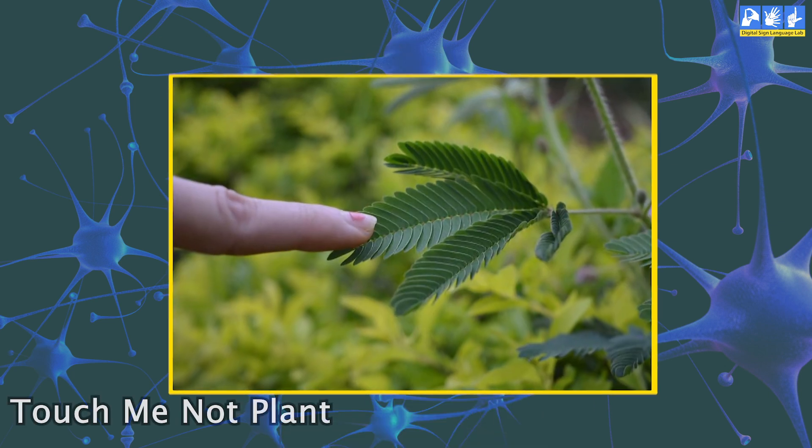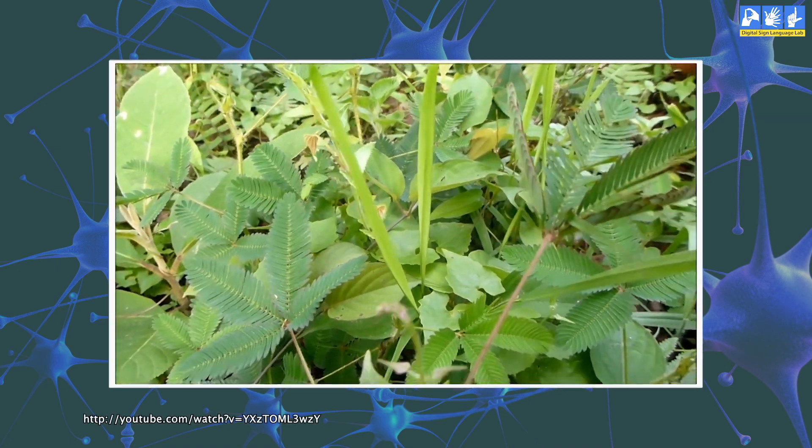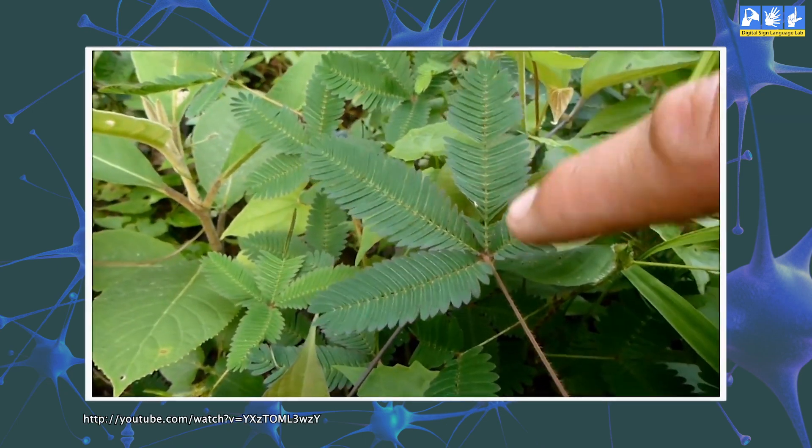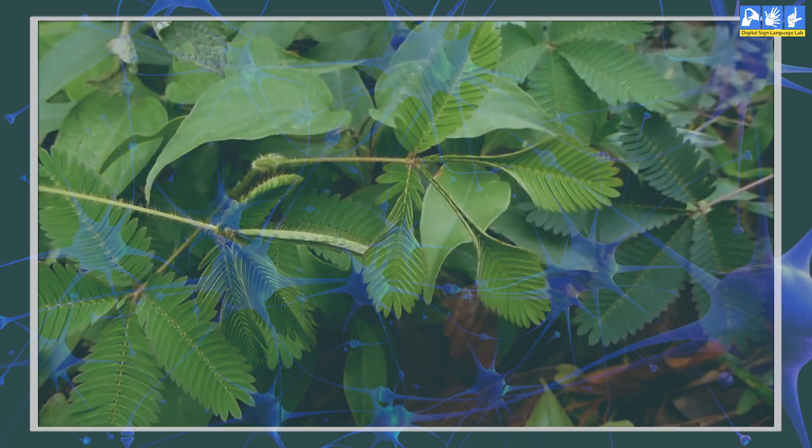There is a plant named Touch me not. When we touch the leaves of the plant, the leaves start closing and drooping. Take a look at the short videos of this plant. The leaves of this very small plant fold up on a gentle touch. How does it happen?